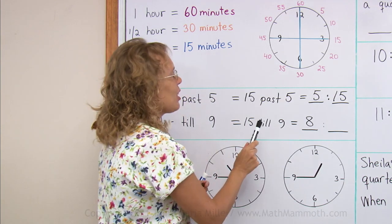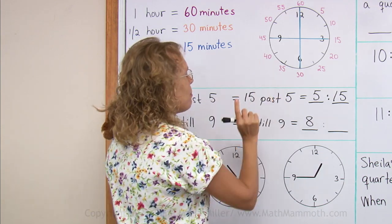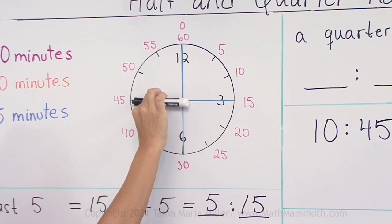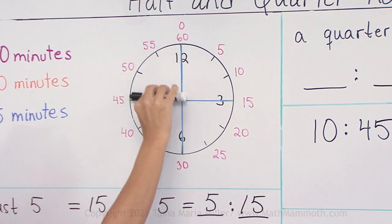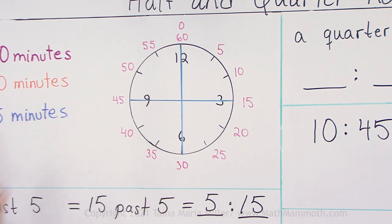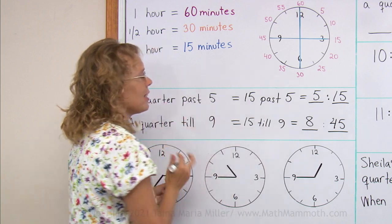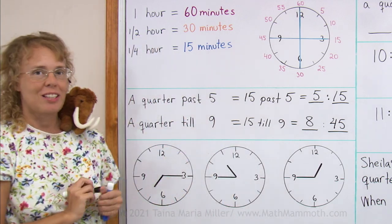And now let's look back at the clock over here. 15 minutes till something will mean the minute hand is pointing here. There's 15 minutes to go. So it means 45 minutes this way. 8:45 is the same as 15 till 9 is the same as a quarter till 9.